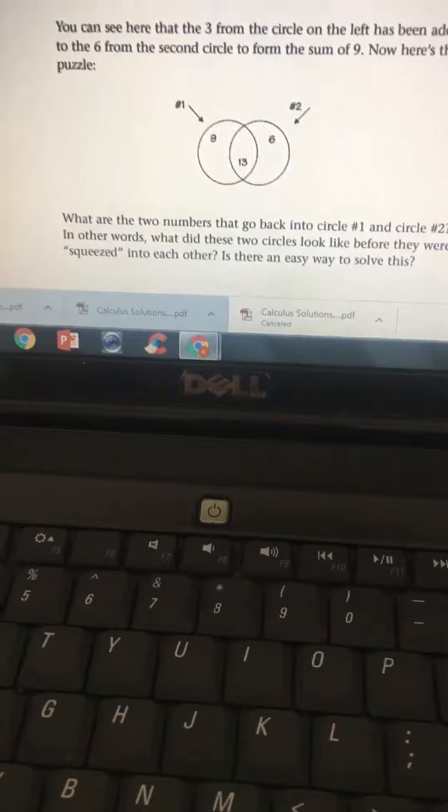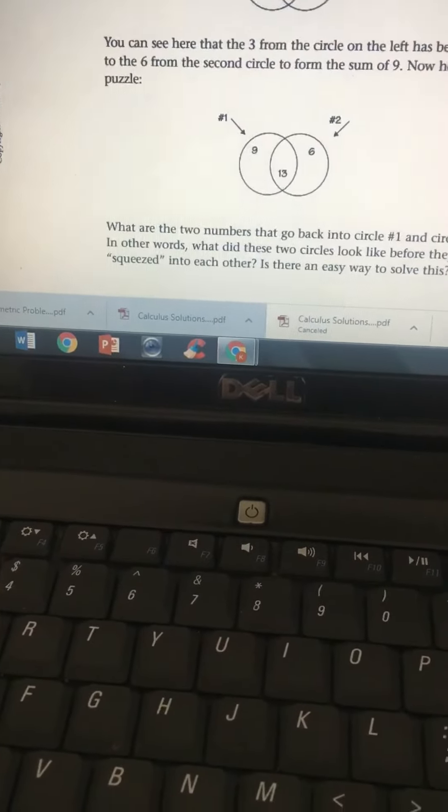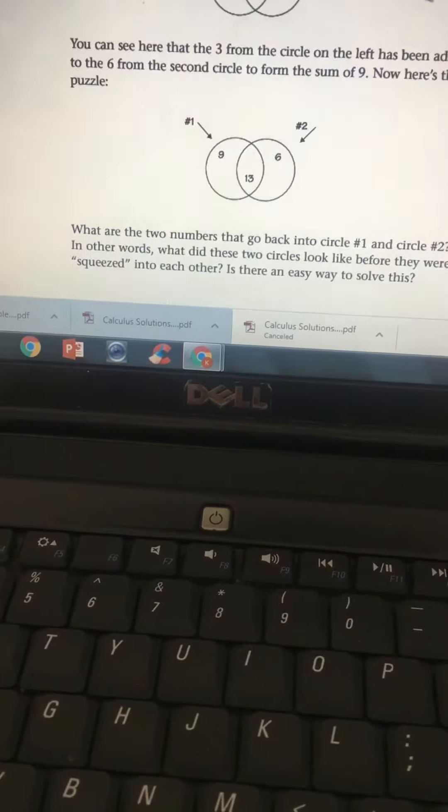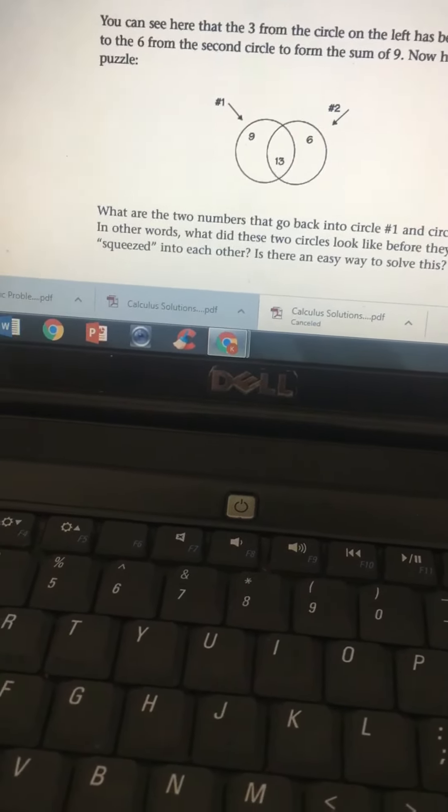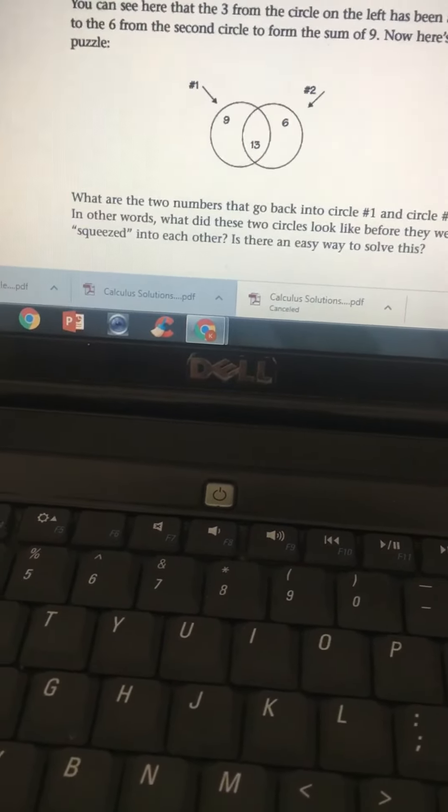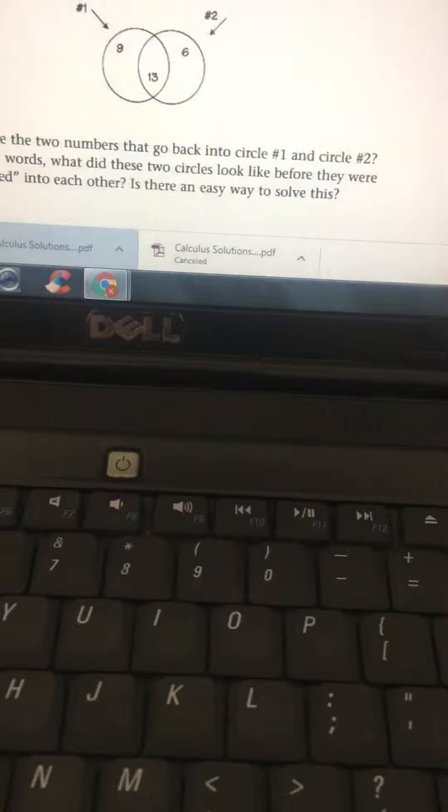Now here's the puzzle: What are the two numbers that go back into circle 1 and circle 2? In other words, what did these two circles look like before they were squeezed into each other? Is there any easy way to solve this?